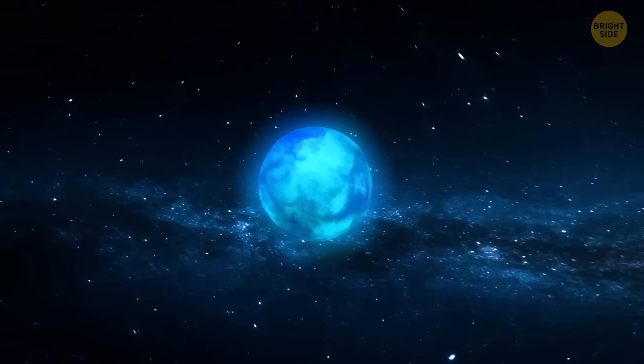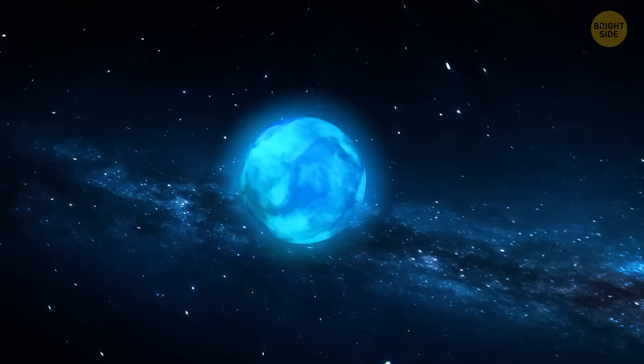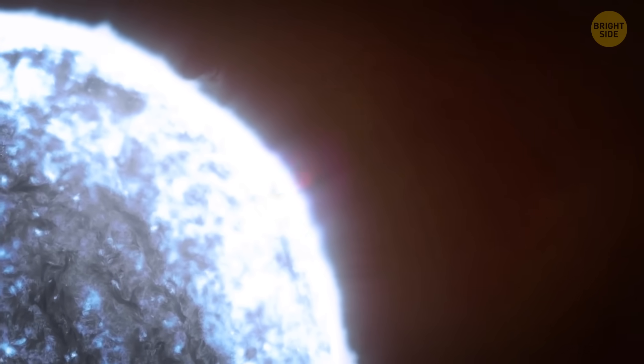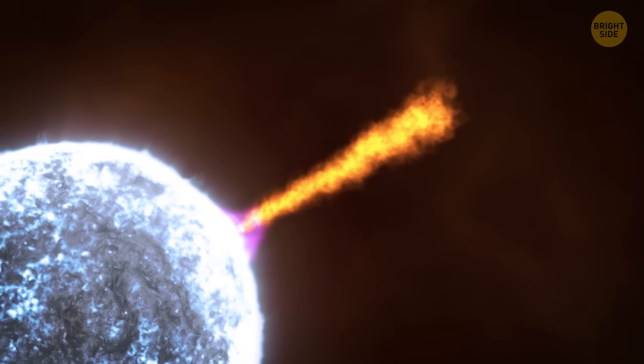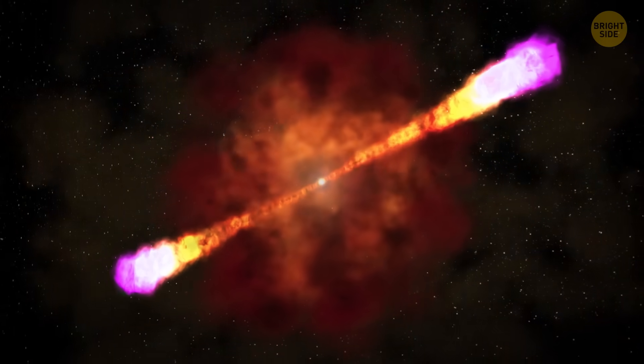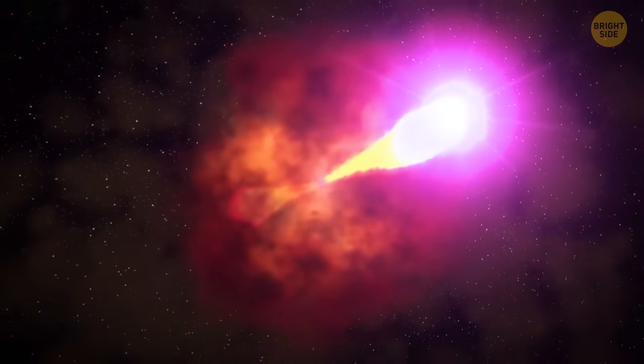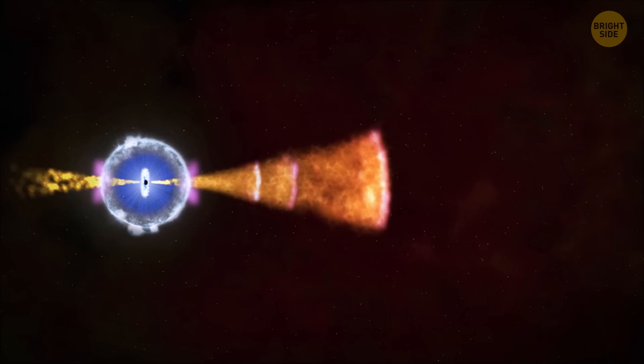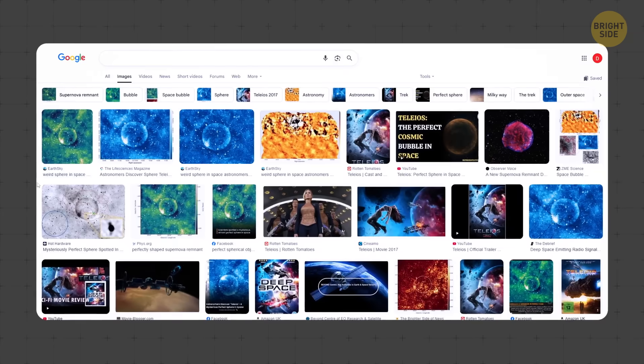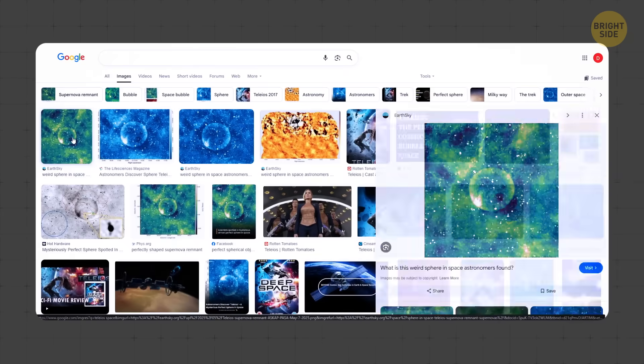Then there's another strange thing. Teleos' nearly perfect spherical shape. That's not normal. Usually, supernova explosions are kind of messy and uneven. The blast might push into clouds of space dust or gas, or parts of the explosion might move faster than others. Eventually, the shell that forms gets all lumpy or starts to break apart. But in this case, the object is almost perfectly round, like a balloon.